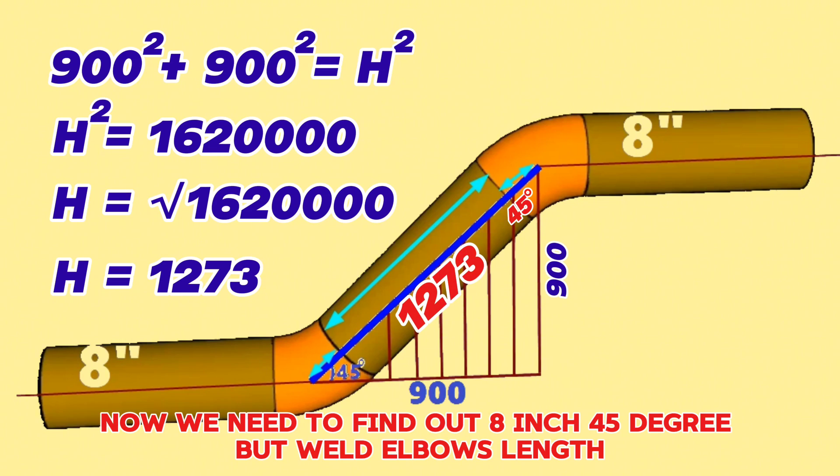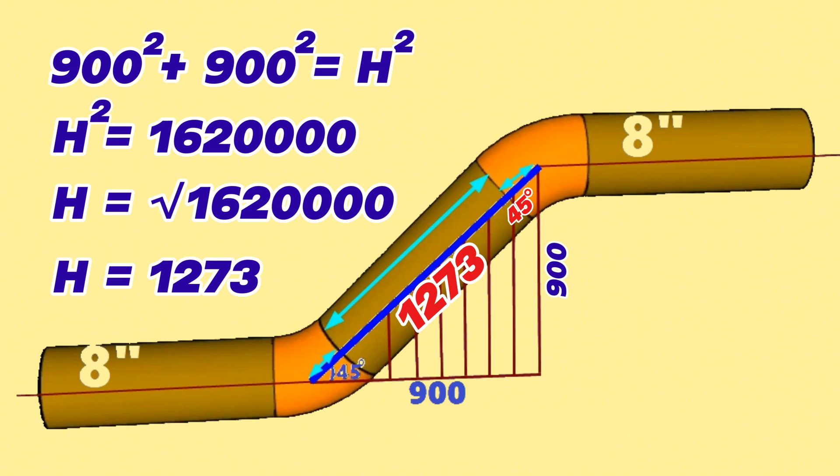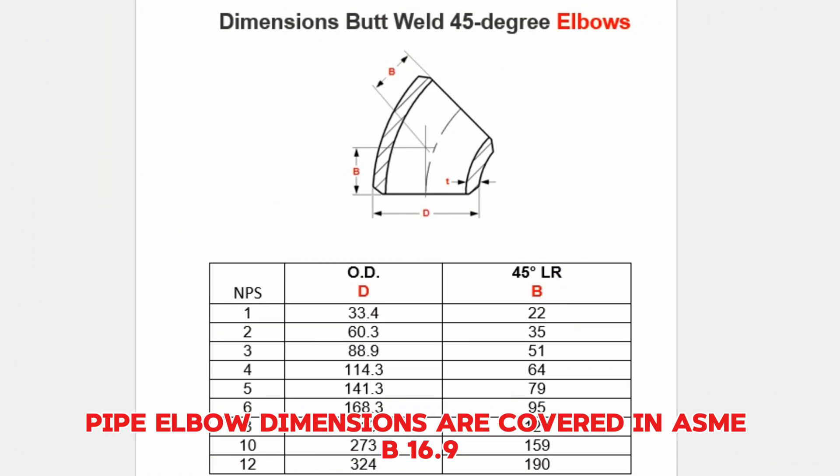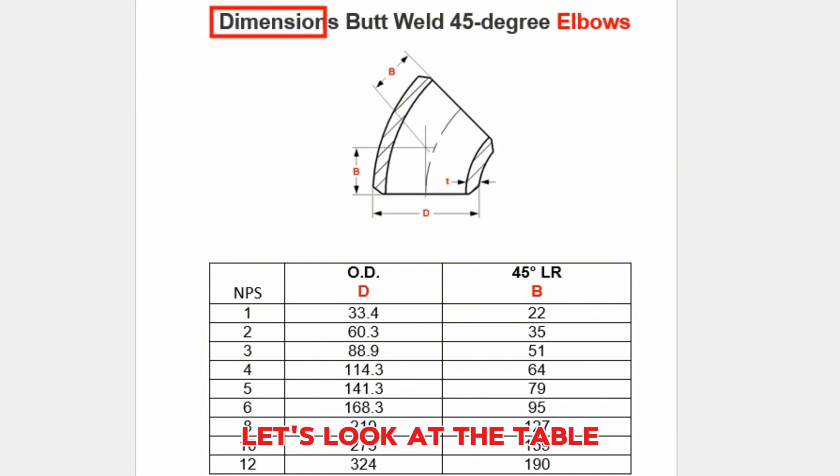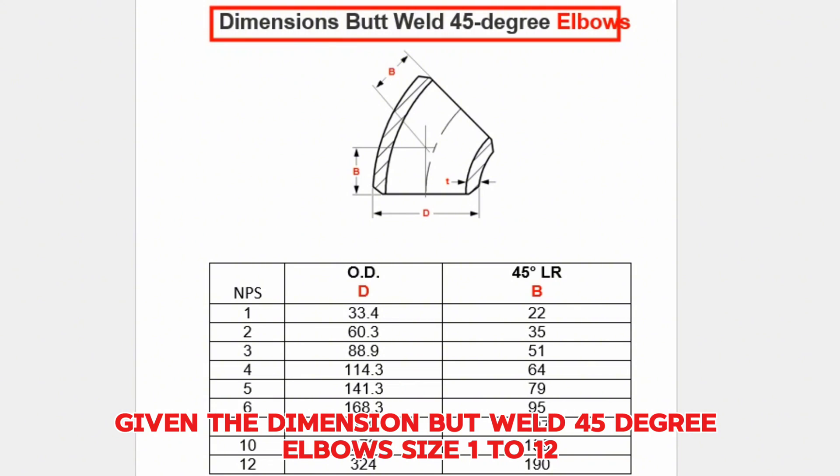Now, we need to find out the 8-inch 45-degree butt weld elbow length. Pipe elbow dimensions are covered in ASME B16.9. Let's look at the table giving the dimensions for butt weld 45-degree elbows size 1 to 12.